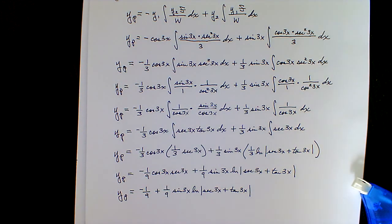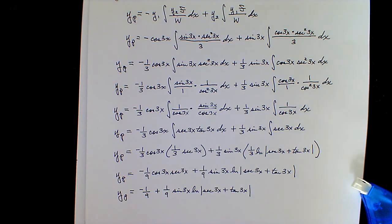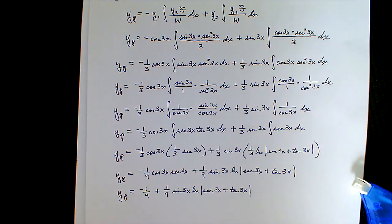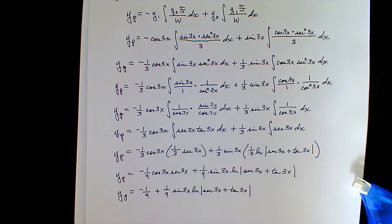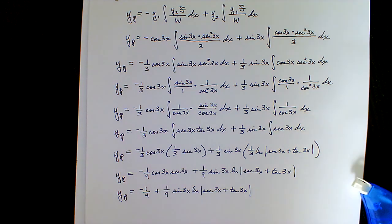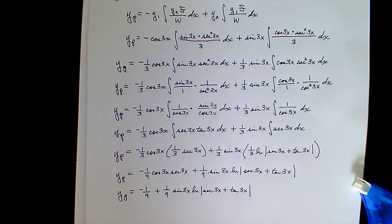That was extra practice for variation of parameters, and this is the end of part 3. We'll come back for part 4, which will just have two questions left: an RC circuit and an RLC circuit. That should be finished easily within the 20 minutes or so we normally take for these videos. We'll see you then.